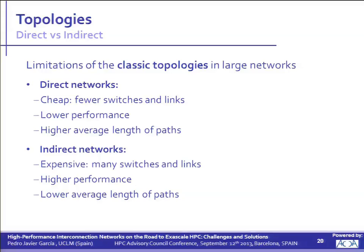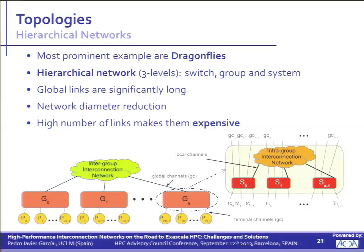As both types of topologies present some limitations, researchers have been exploring new paths — new ways to provide great performance by means of different topologies. New topologies have arisen during the last years. One of the most explored topologies is hierarchical networks, with Dragonflies being the most prominent example. I will not go into great detail, because there is another talk today from Frank Olaf about Dragonflies, so I will almost skip this type of topology.